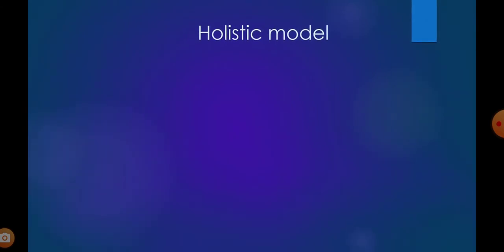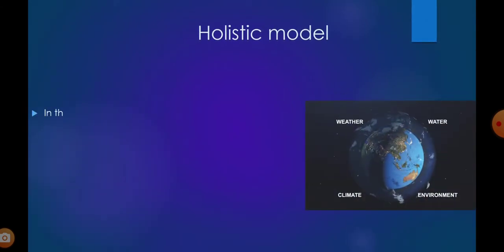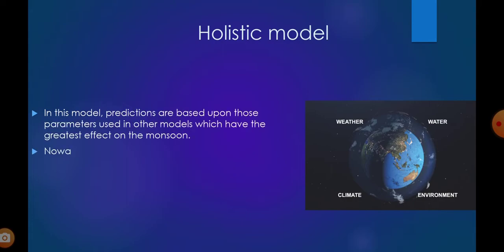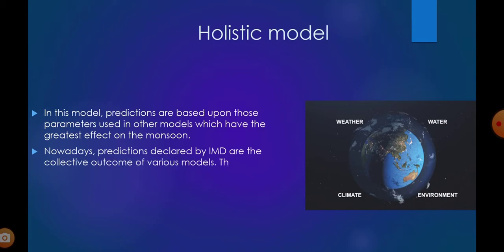Holistic method. In this model, predictions are based upon those parameters used in other models which have the greatest effect on the monsoon. Nowadays, predictions declared by IMD are the collective outcome of various models — this is called the holistic model.